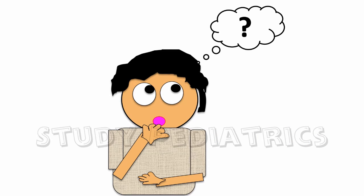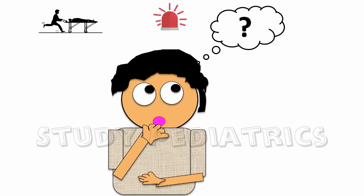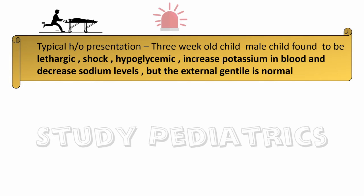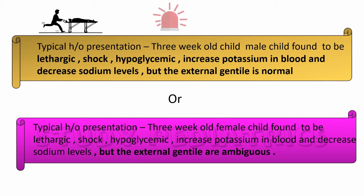You might be thinking that if all the life-sustaining hormones are at stake, how will the baby survive? Indeed, these babies land up in the emergency with the following typical history: a 3-week-old male child, found to be lethargic, in shock, hypoglycemic, with increased potassium and decreased sodium levels in the blood, and ambiguous external genitals.